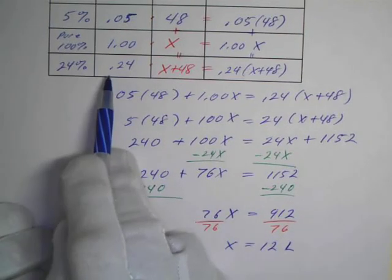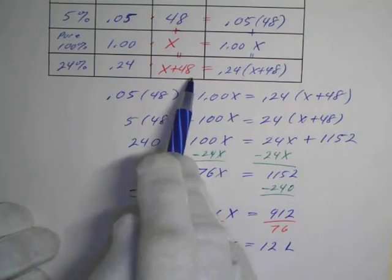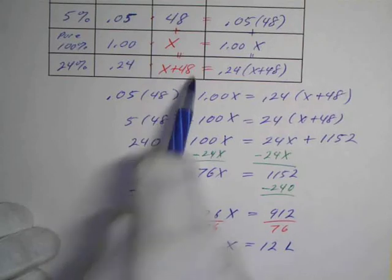So 24% of, well 12 plus 48 is 60. 24% of 60, that's how much sulfuric acid we'll have.